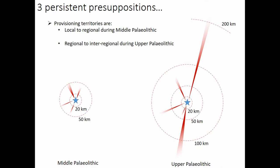First, concerning provisioning territories: for the Middle Paleolithic, these are more local to regional, with distances of provisioning about 50 kilometers. By contrast, during the Upper Paleolithic, it is very common to have far distance provisioning up to 200 kilometers.